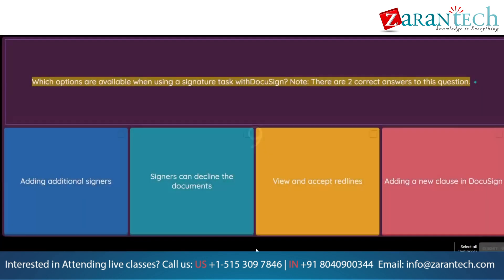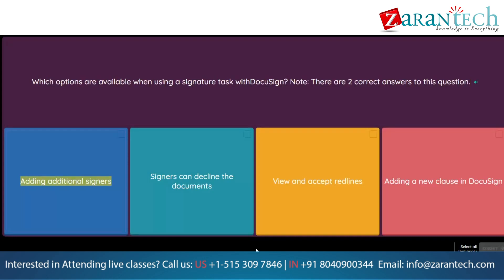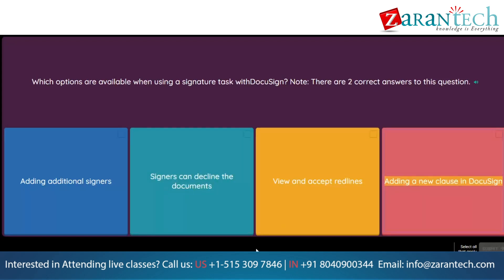Question: Which options are available when using a signature task with DocuSign? Note: there are two correct answers to this question. Option 1: Adding additional signers. Option 2: Signers can decline the documents. Option 3: View and accept red lines. Option 4: Adding a new clause in DocuSign.